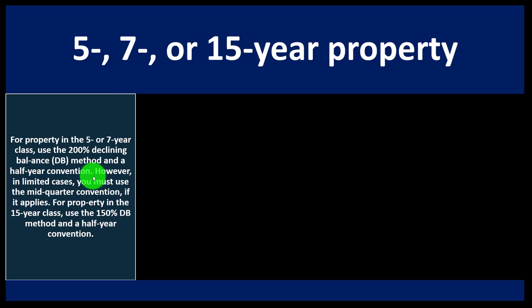For taxes, accelerated depreciation is generally preferred. However, in limited cases you must use the mid-quarter convention — this typically happens when people try to abuse the mid-year convention by purchasing everything on December 31st and claiming six months of depreciation. The tax code responds by requiring the mid-quarter convention in that scenario.